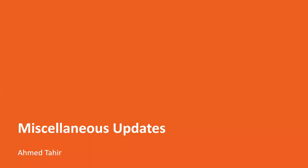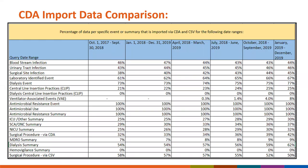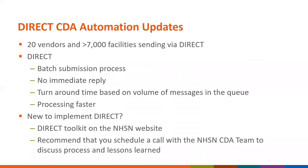This slide displays the number and percentages of CDA imports versus manual entry or CSV imports for procedures. The year date range was selected to include completed quarterly CMS reporting. Please note the steady increase in CDA submission—we would like to express our gratitude to all of our vendors and users. For direct CDA automation, we are at 20 vendors submitting via direct. The number of facilities sending via direct has been increasing and is now greater than 7,000 facilities.